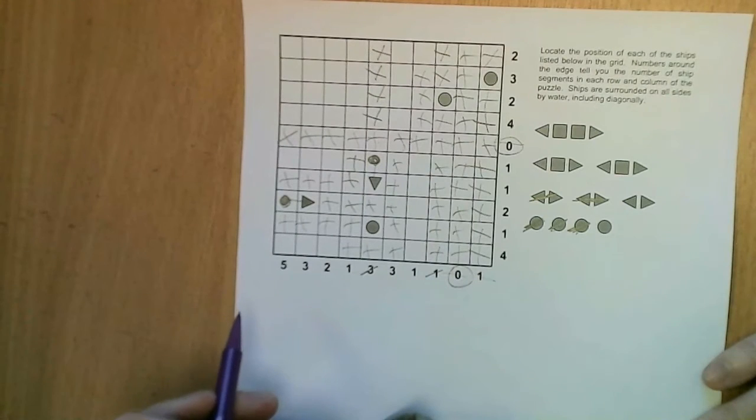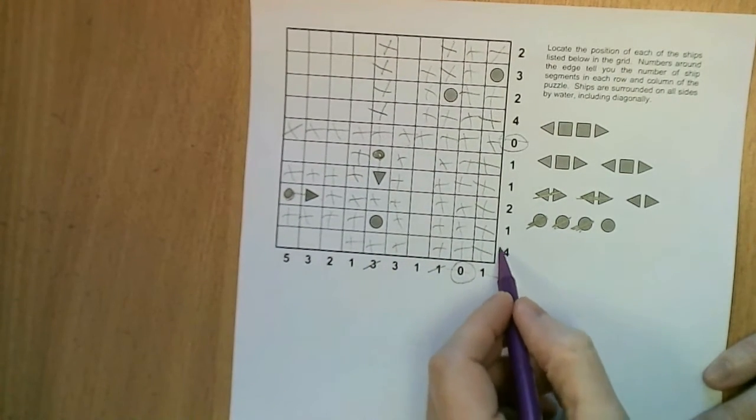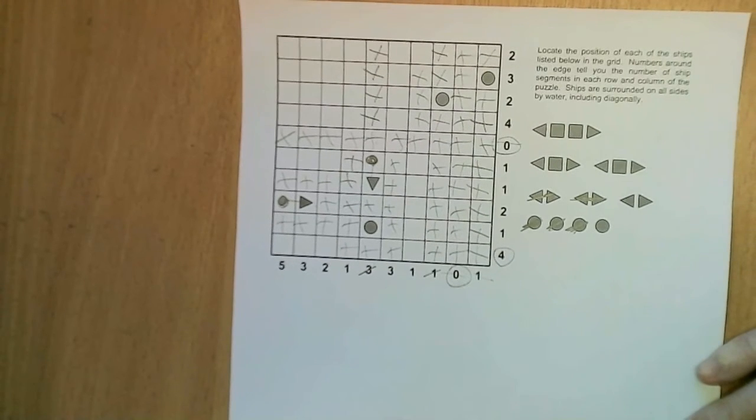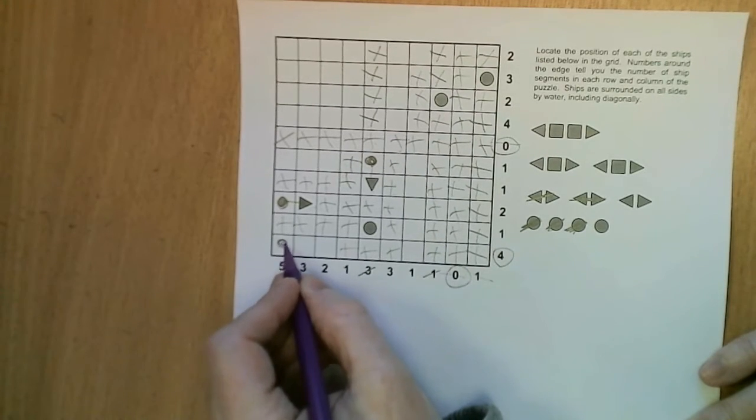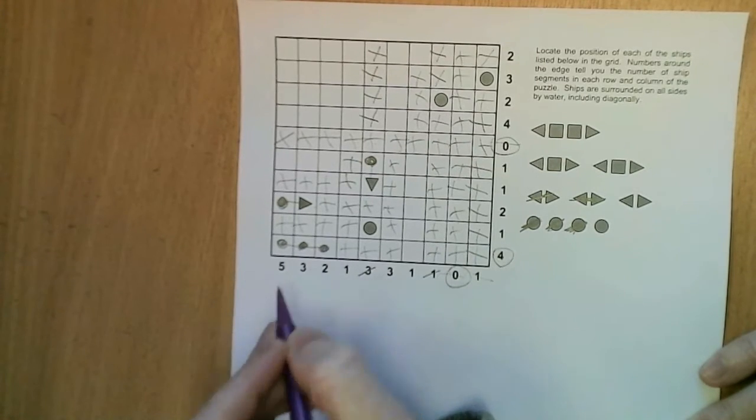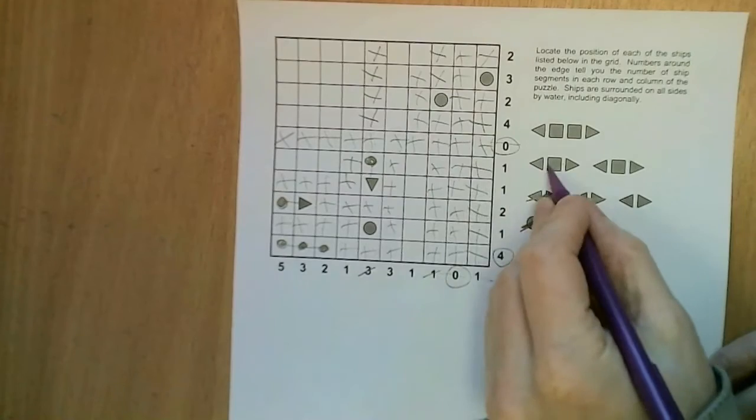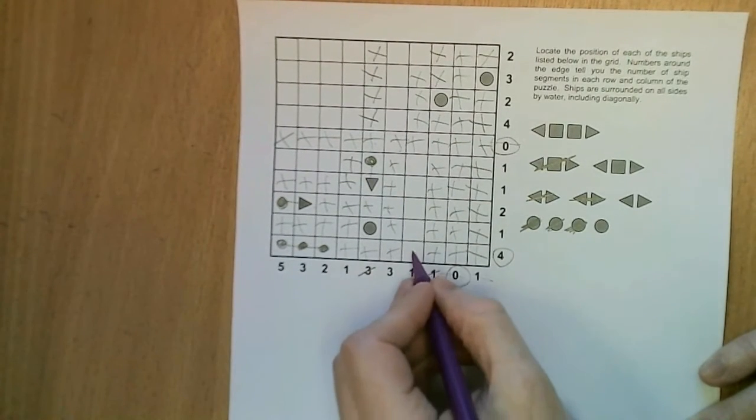Marked there. Okay so now let's look at this bottom row which contains four ship segments in total and there's four squares left, so in fact we know where they must be, there's only one option. This must be one of our ships that contains three segments and this is a ship segment two.